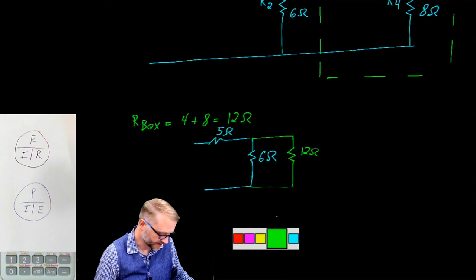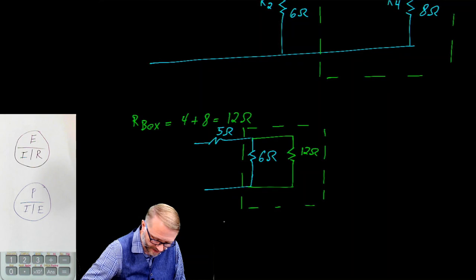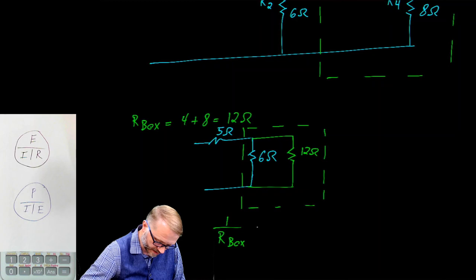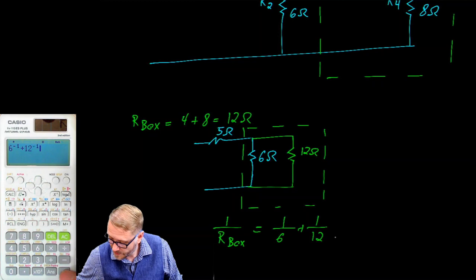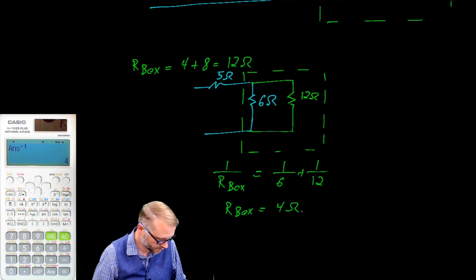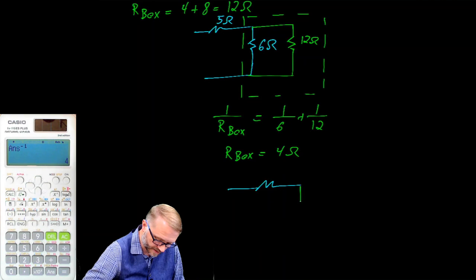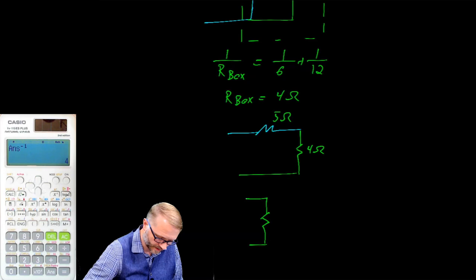Once again we draw a box. We can calculate the resistance of that box: 1 over our box is 1 over 6 plus 1 over 12. Going to our calculator: 6 inverse plus 12 inverse equals inverse — so that's 4 ohms. We redraw the circuit again. Here's the original 5, here's the 4 we just calculated, and we draw another box. Finally we arrive at our result, which is 9 ohms.